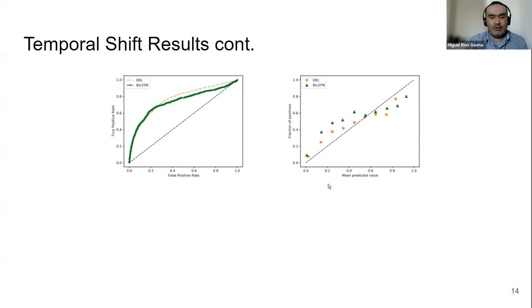We can see it here with the Brier score and the calibration plot. Another interesting thing that we can observe is that deep kernel learning has a bit better calibration than the bi-LSTM.